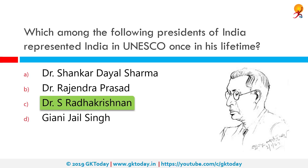The correct answer is Dr. S. Radhakrishnan. He was the representative of India at UNESCO once India became independent, and he served as our representative in UNESCO between 1946 and 1952. He was later the Ambassador of India to the Soviet Union between 1949 and 1952.